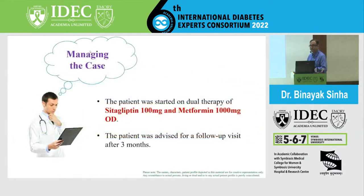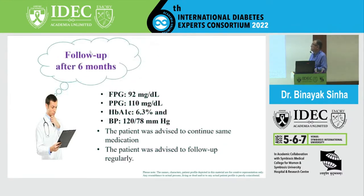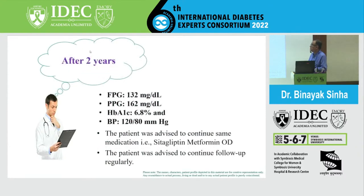Returning to the patient, he was started on sitagliptin and metformin and followed up. His blood sugars came down to 7.4%, and he was maintained on the same medication. Demonstrating the durability of treatment, his HbA1c came down to 6.3%, blood sugar remained under control, and after two years it had remained well controlled — a huge advantage, as the patient did not need to change medications.